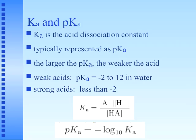Chemists use the concept of Ka and pKa, where Ka is known as the acid dissociation constant. K is the symbol we use to represent dissociation — a molecule breaking apart into two ions — and the subscript A represents acid. In medicinal chemistry we typically don't talk about Ka values directly (they're values like 1.8 × 10⁻⁵). Instead, we take the log of those values to get a pKa. The larger the pKa, the weaker the acid; the smaller the pKa, the stronger the acid. Weak acids have a pKa of about −2 to 12 in water; strong acids have a pKa less than −2.